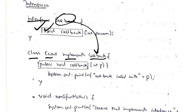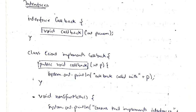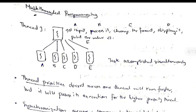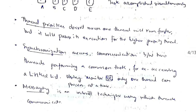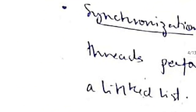Multi-threaded programming means the same task can be divided into multiple parts, and each part is performed simultaneously. There are keywords to know: thread, thread priorities (which thread runs first, second, third, etc.), and synchronization.